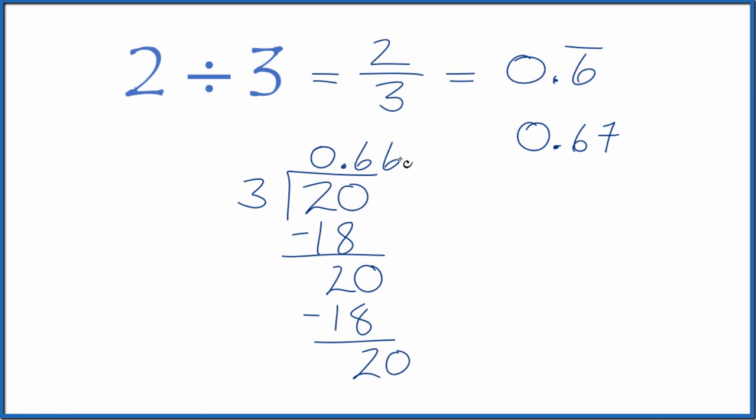So we just keep getting 0.666666. The sixes, they repeat, and that's why we wrote 0.6 with the bar to show they're repeating, although sometimes it's rounded.